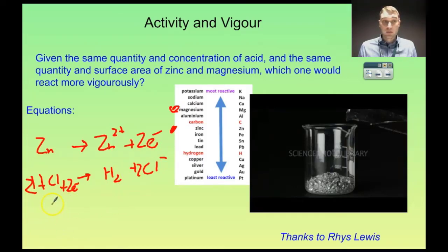So now we can write our overall equation. So zinc plus - now we've got two hydrochloric acids here - 2HCl. Two electrons and two electrons on either side of the arrow they'll cancel out. So then we go to zinc ions plus two chloride ions plus hydrogen gas. So now we've written that out.